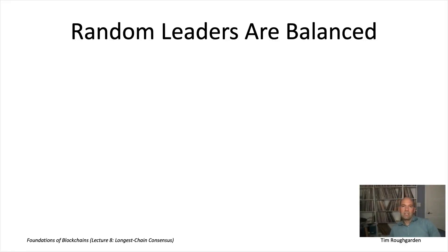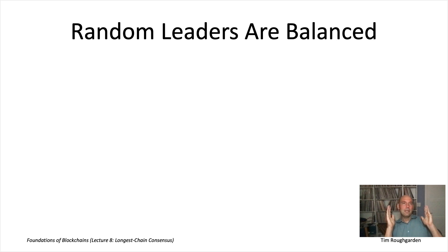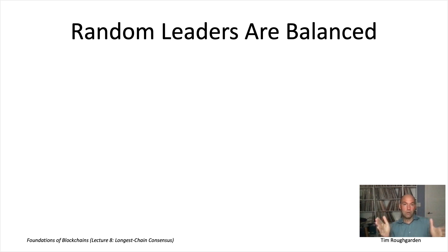What we saw at the end of the last video is that the key that unlocks all of the good properties of longest chain consensus really boils down to how balanced the sequence of leaders is. What does it mean that a leader sequence is W-balanced? It means that if you look at any interval of W or more consecutive leaders, over half of them should be honest nodes.